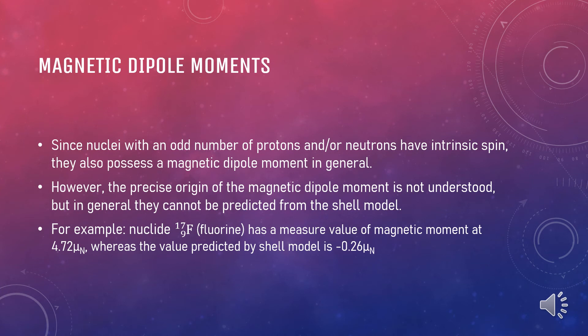Since nuclides with an odd number of protons and or neutrons have intrinsic spin, they also possess a magnetic dipole moment in general. However, the precise origin of the magnetic dipole moment is not understood and they cannot be predicted from this shell model. For example, we take the nucleus fluorine that has a measured value of magnetic moment at 4.72 whereas the value predicted from the shell model is negative 0.26 which gives a wide gap of difference.